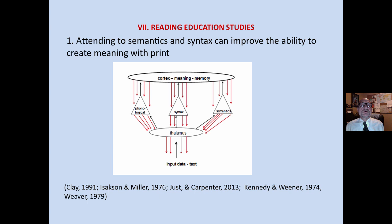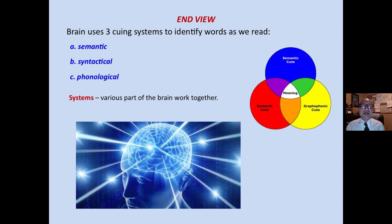Reading instruction studies have also shown that attending to semantics and syntax can improve the ability to create meaning with print. The brain uses three cueing systems to identify words as we read — these systems are various parts of the brain that work together, not a single system.